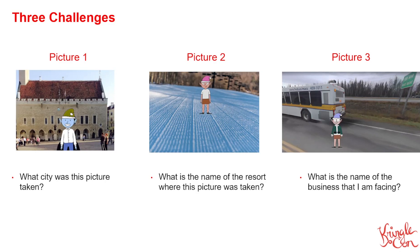We're going to work through three images they provided to us. Picture one: we've got an elf in front of an interesting looking landmark. Picture two: we have some snow — can't really tell what that is. And picture three: there looks like a bus and a street sign. The questions are: picture one — what city was this picture taken in? Next — what is the name of the resort this picture was taken at? And last — what's the name of the business that I am facing? This last one looks like it should be a challenge.